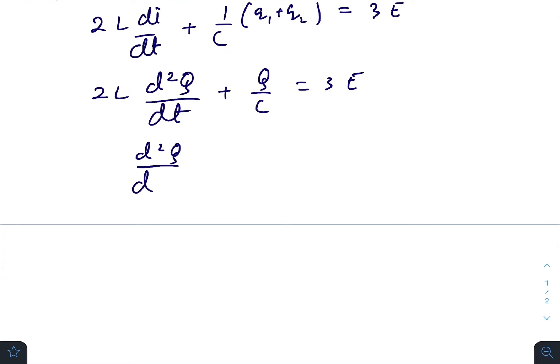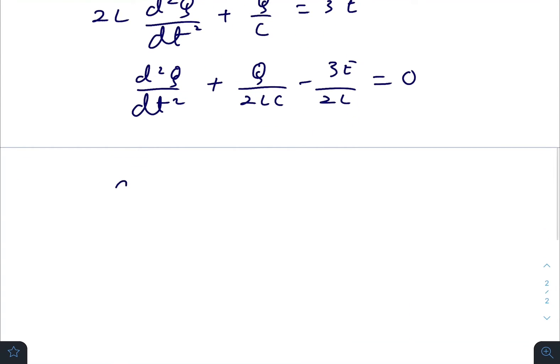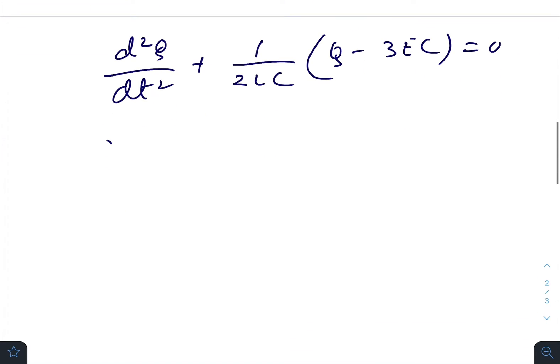So d²Q/dt² + Q/(2LC) - 3ε/(2L) = 0, or d²Q/dt² + 1/(2LC)(Q - 3εC) = 0. This can be rewritten as d²/dt²(Q - 3εC) + 1/(2LC)(Q - 3εC) = 0. You can write the general solution for this.